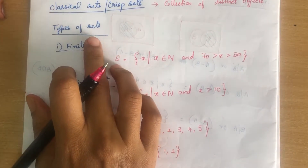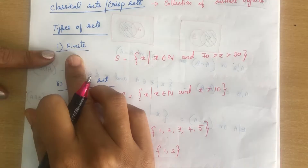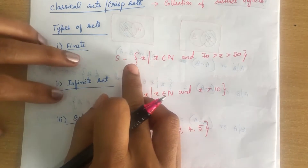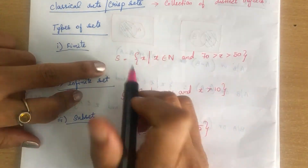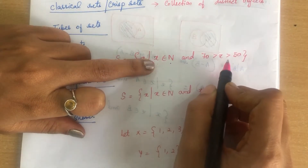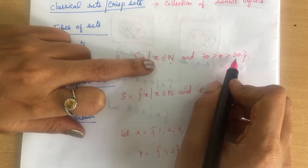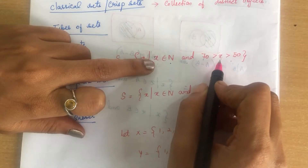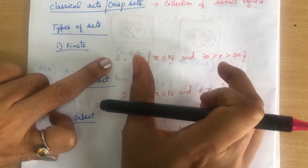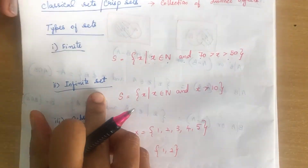Now we will see the types of sets. There are several types. The first is finite set — a set which contains a definite number of elements. For example, S = {x | x ∈ ℕ, 50 < x < 70}. There are 20 numbers between 50 and 70, so this set is finite. Next is infinite set — for example, {x | x ∈ ℕ, x > 10} — since there are infinitely many numbers above 10, this is an infinite set.